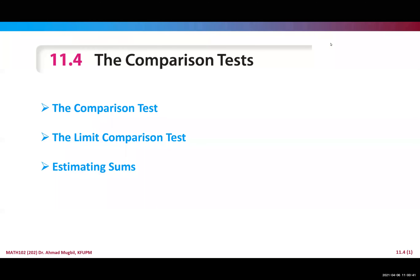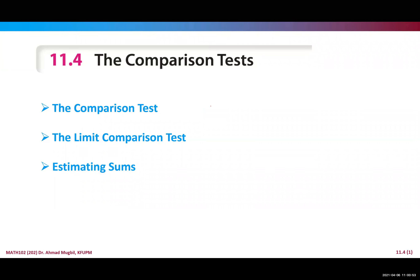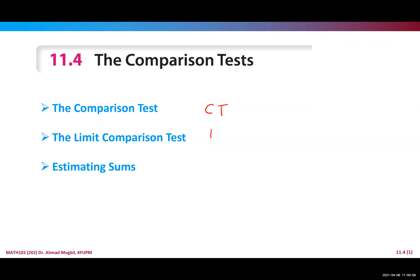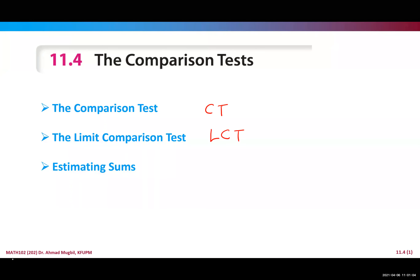Section 11.4 is about the comparison tests. We mainly have two tests: the direct comparison test, which we will call the CT, and the limit comparison test, which we will abbreviate as LCT. Next class we will talk about how to estimate the sums, but not today.